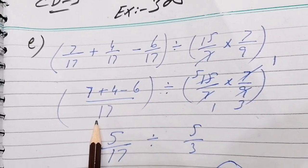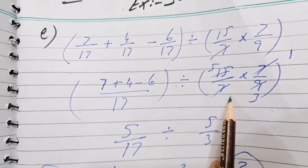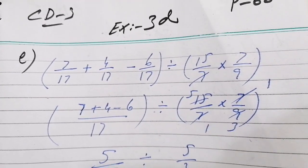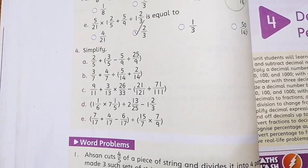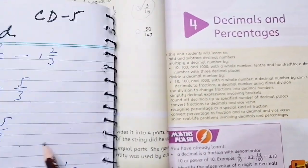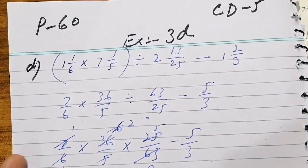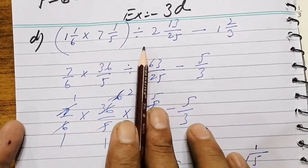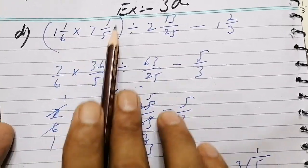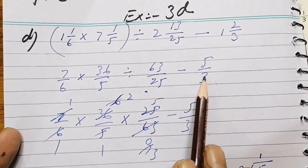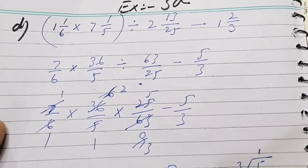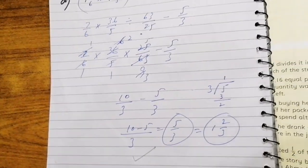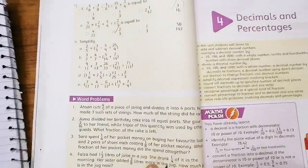Then multiply and cancel. We have solved: 3 over 7. Rest of the parts you can practice at home. D part you can see, D part solved. So here bracket is there, multiply, division is also there and subtract, so first you will solve, and then you will solve after subtraction. Practice these questions at home. That's all for today, thank you.